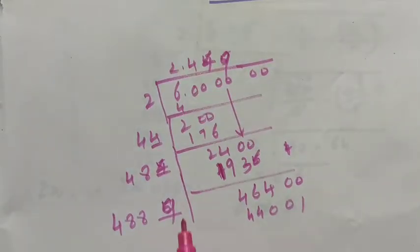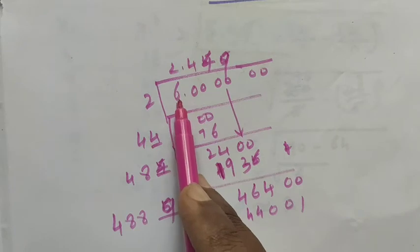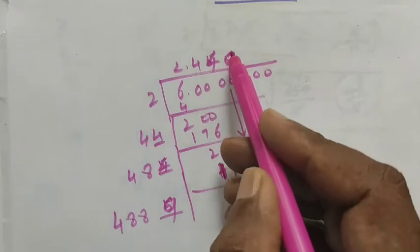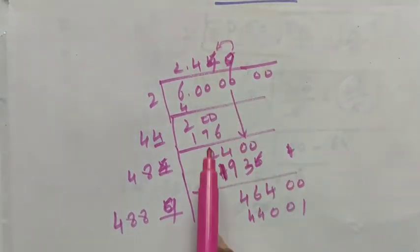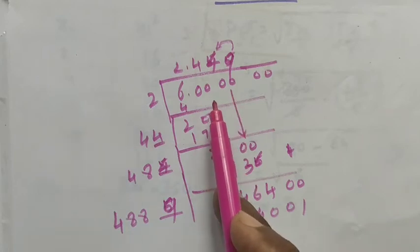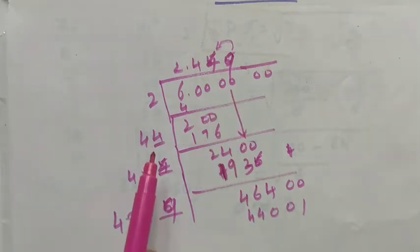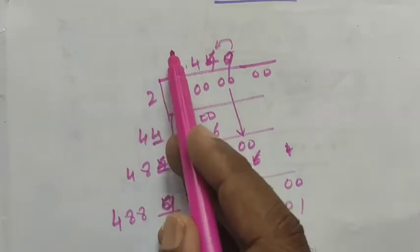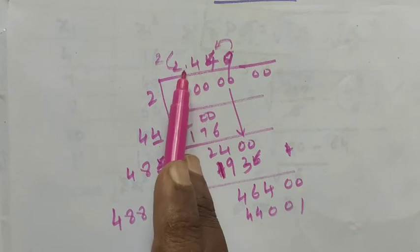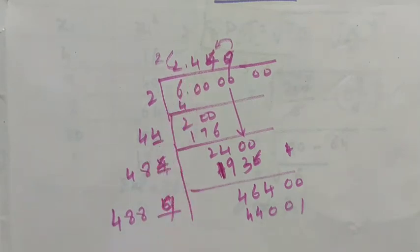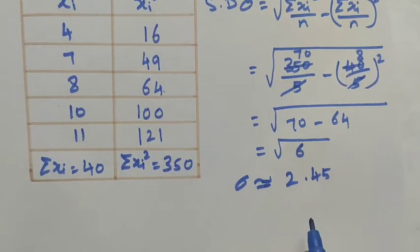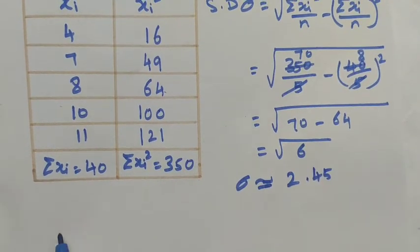Finding the square root of 6: root 6 equals 2.449, which is approximately 2.45. We can add pairs of zeros and work through the long division method, multiplying each digit by 2 at each step. So the standard deviation sigma for the original data is approximately 2.45.